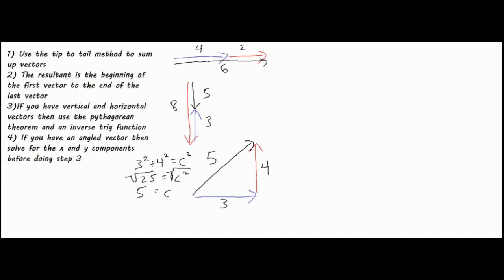The reason we use an inverse trig function is to find a direction. Since the vector isn't directly up, down, left, or right, we can't just say north or east — we need to find a specific angle. I'll use the inverse of tangent, using opposite over adjacent from SOHCAHTOA. So that's the inverse tangent of four over three, which equals 53.13 degrees.